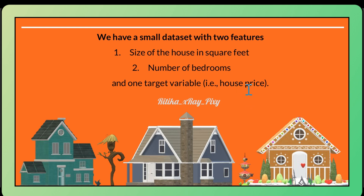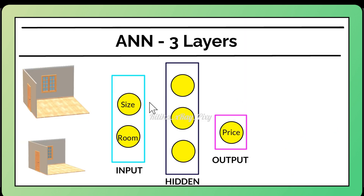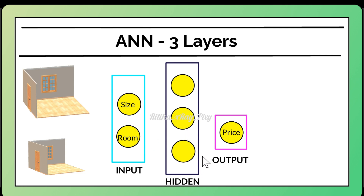We have three layers: input layer, hidden layer, and output layer. For the input layer, this layer has two neurons, one for each feature. We have one hidden layer with three neurons, and in the output layer we have one neuron that predicts the house price as the output.